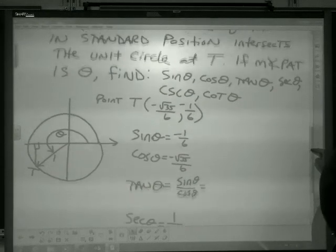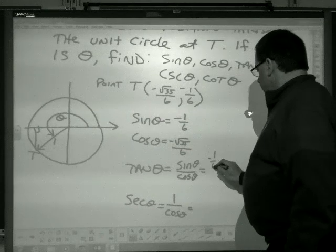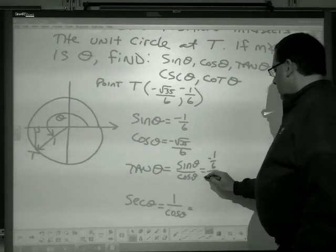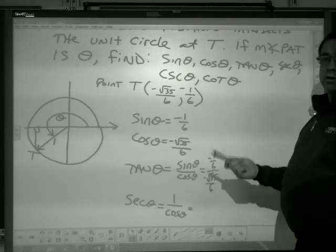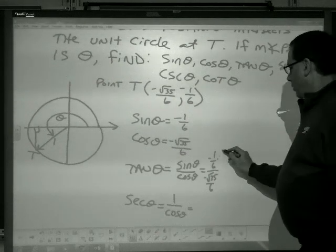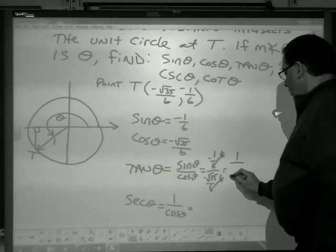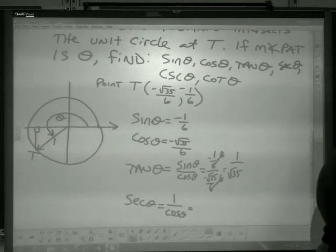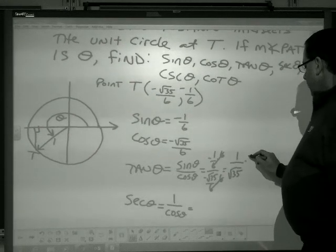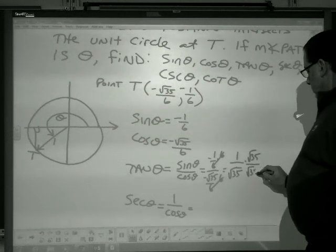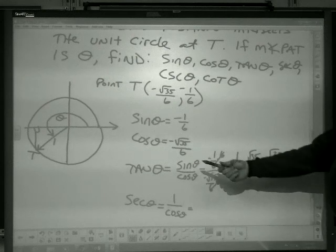The tangent, then, is the sine over the cos. So, the sine, negative 1 over 6, over the cos, negative radical 35 over 6. Well, divided by negative, I know it's going to be positive. And, my common denominator is 6. So, if I multiply both top and bottom by 6, my answer is positive 1 over the square root of 35. But, we do not like to leave radicals on the bottom. So, I'm going to multiply top and bottom by radical 35. And, I get the square root of 35 over 35. And, that would be the tangent of that angle.